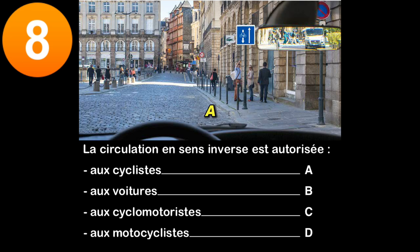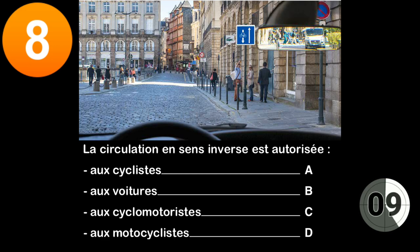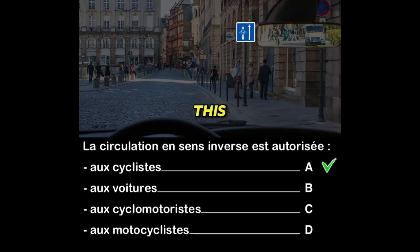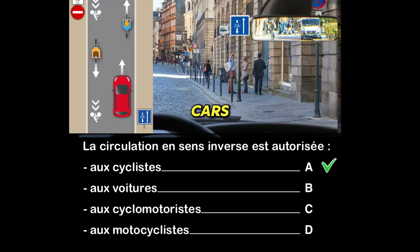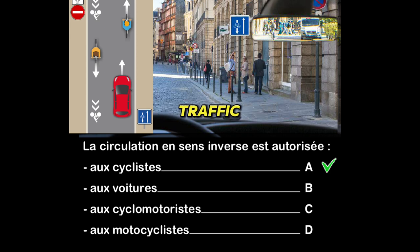Question eight: circulation in reverse traffic is allowed to cyclists (A), cars (B), bikes (C), or motorcyclists (D)? This signal indicates a double cycling direction. Reverse traffic is reserved for cyclists — they are the only users allowed to take the street in the other direction. Cars, bikes, and motorcyclists must not do this, since traffic is one-way for all other users.